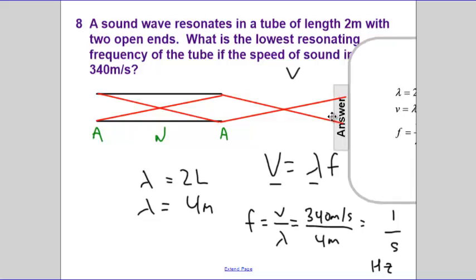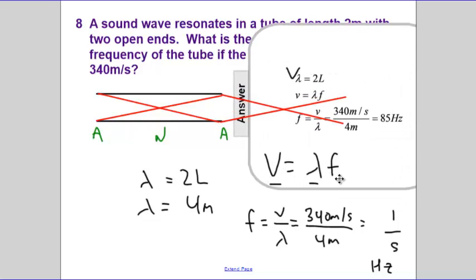And then lastly, 340 meters per second divided by 4 will give us 85 hertz. Will you be able to hear this musical note that's played in this tube of this length if it's 85 hertz? The answer is yes, because it falls in the audible spectrum. Very nice.